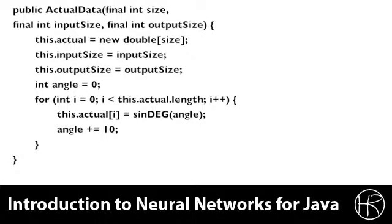First, we create an array that holds the actual data that we're going to produce according to the size. We then record the input and output sizes for later when we want to actually generate them, and then we create a starting angle, which is zero.